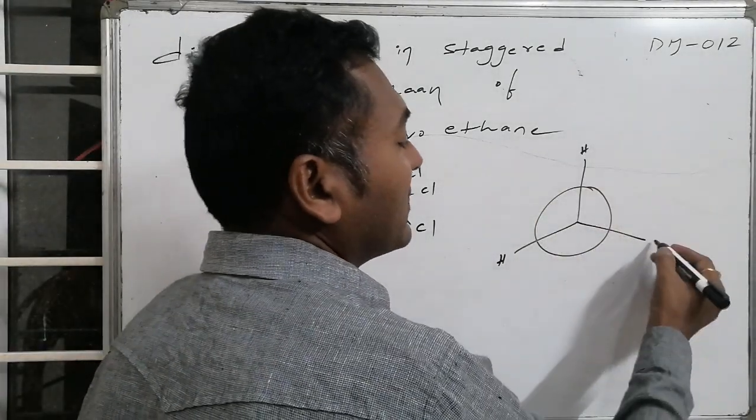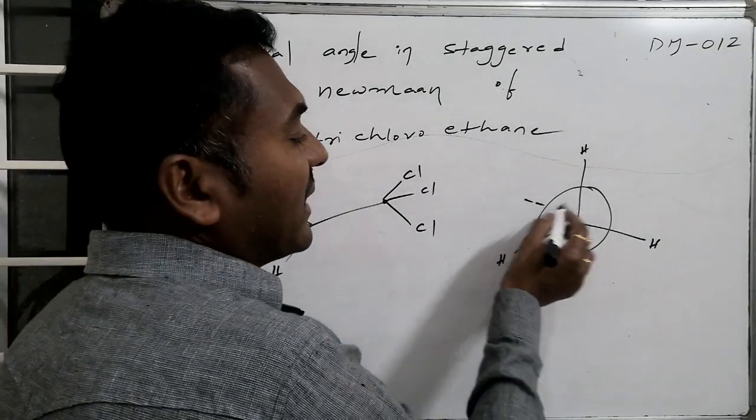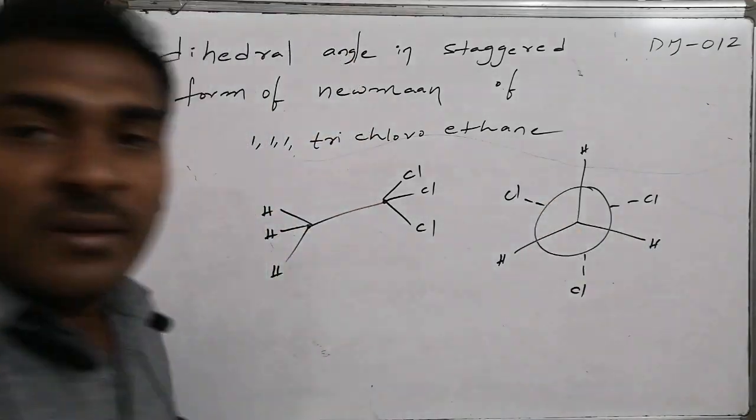Let us say this is the front carbon atom connected with hydrogen. Therefore, the back carbon atom is everywhere connected with chlorine, chlorine, and chlorine.